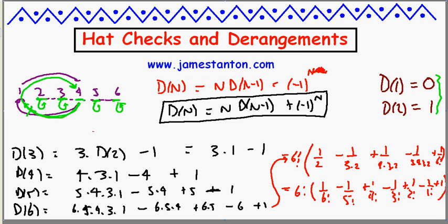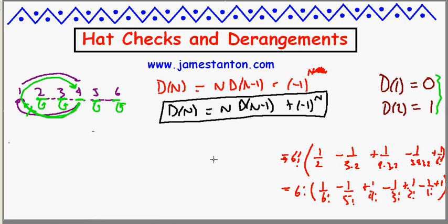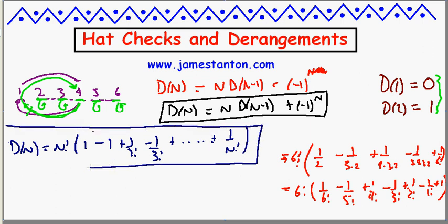And this suggests then that in general, and I guess a formal induction proof would clinch it for sure if you worry about mathematical rigor, that d of n is n factorial times 1 minus 1 over 1 factorial plus 1 over 2 factorial minus 1 over 3 factorial plus all the way up to plus or minus 1 over n factorial. So there is an explicit formula that looks pretty ghastly for the number of derangements.